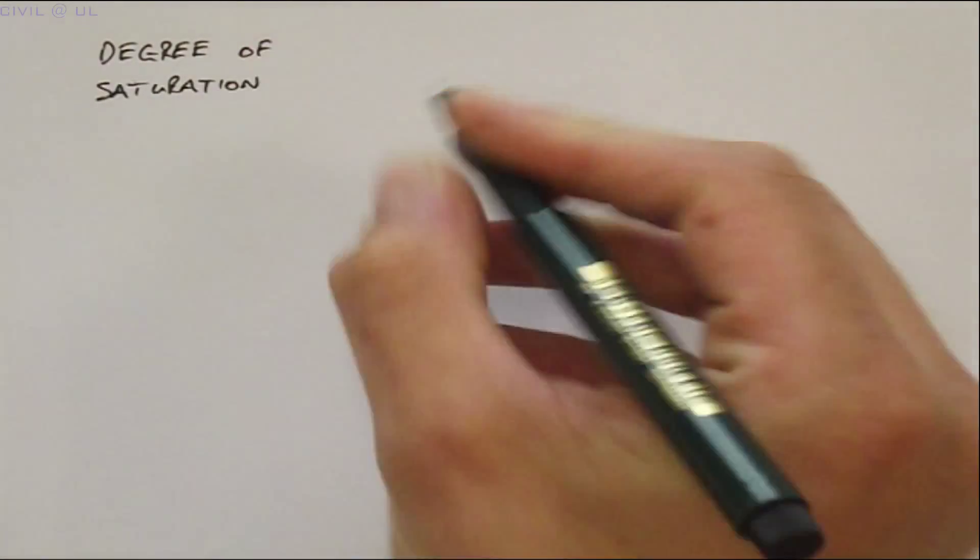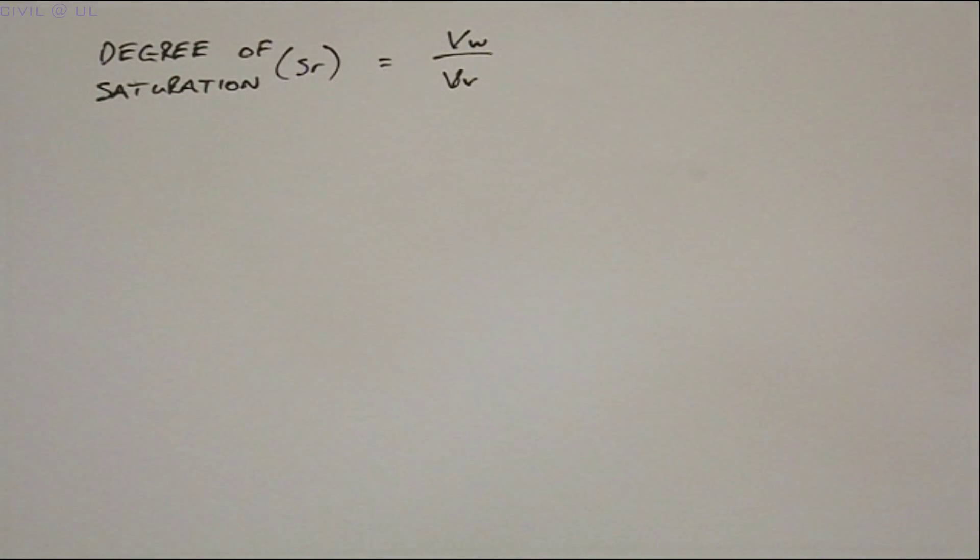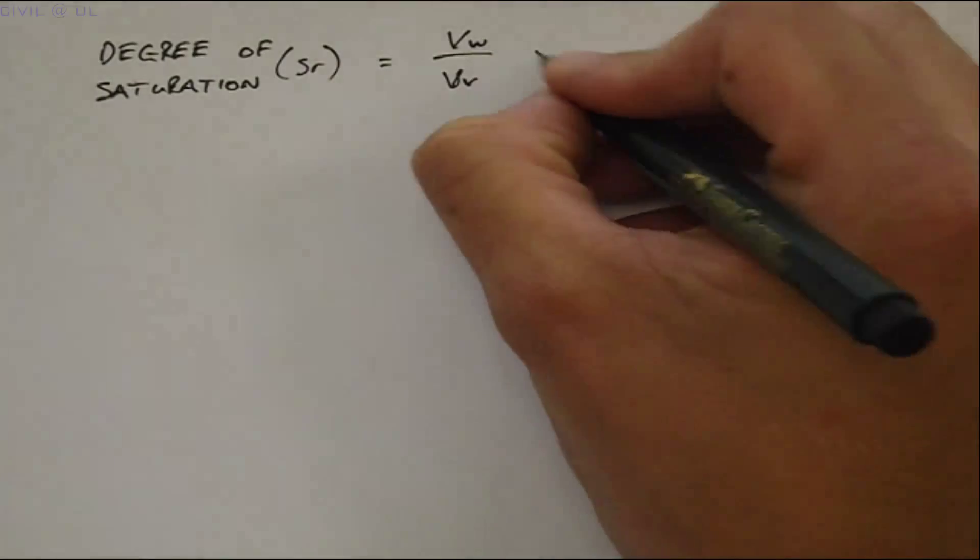The degree of saturation, SR, is also a useful property to be able to calculate. SR is defined as the volume of water divided by the volume of voids, and it is normally expressed as a percentage.